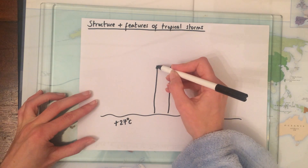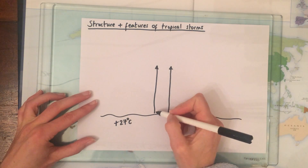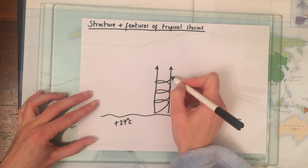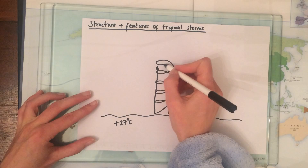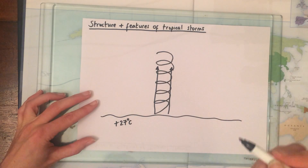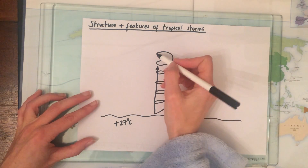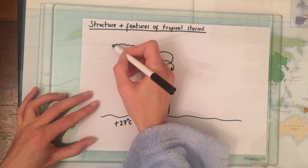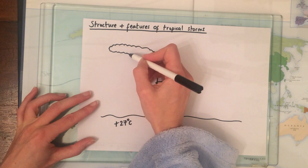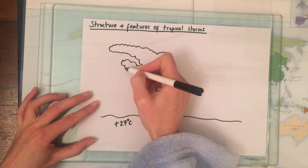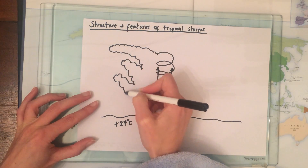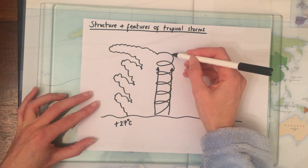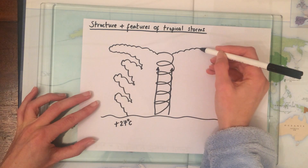That's what creates the strong wind speed. The air rises and spirals as it rises, and as it does so it cools and condenses to form lots of cloud cover, which extends all the way down to ground level on both sides.